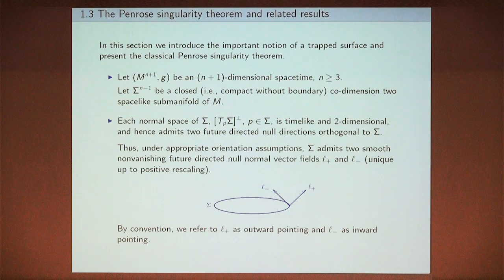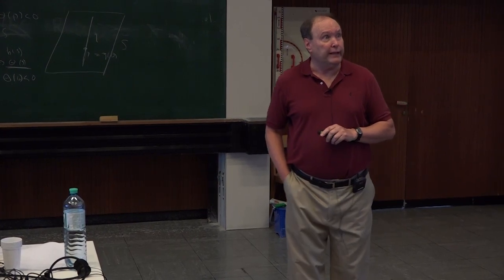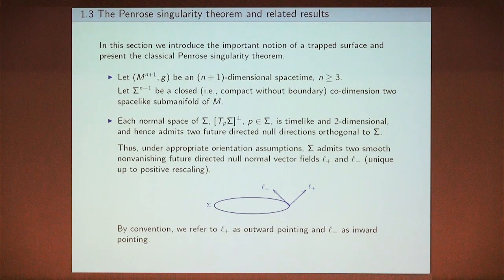That completes our discussion of null hypersurfaces, and we move on to the last section of Part 1. We want to use some of the machinery we've developed to discuss and prove the classical Penrose singularity theorem. Penrose's singularity theorem relies critically on the notion of a trapped surface — the concept he introduced. So we want to define what we mean by a trapped surface.